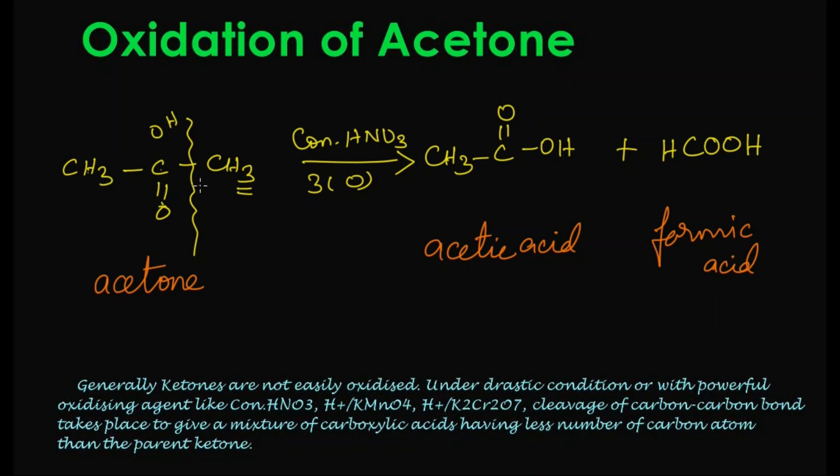Here three carbons are there. The three carbons - the bond gets cleaved and we get the lesser number of carbons, that is acetic acid with two carbons and formic acid with one carbon.